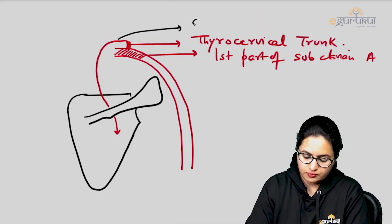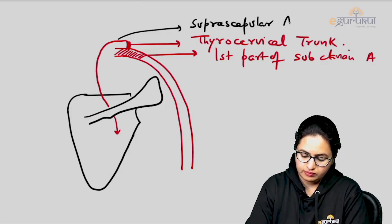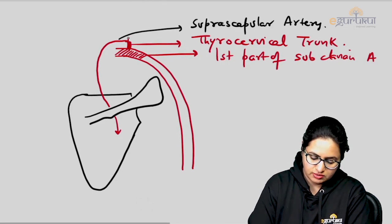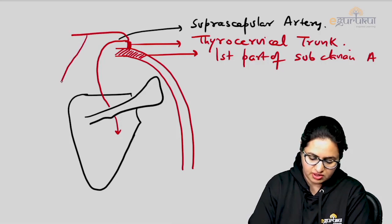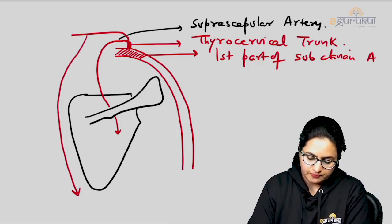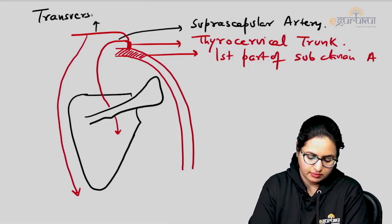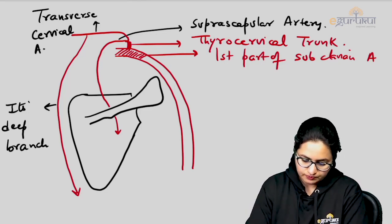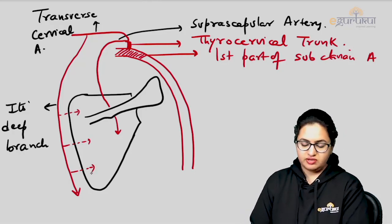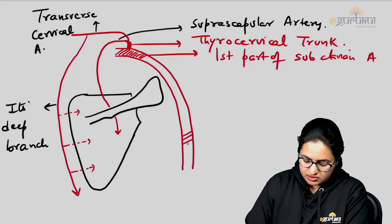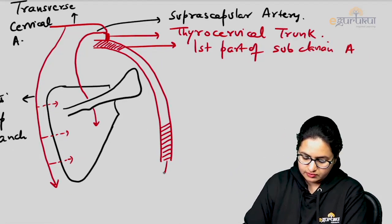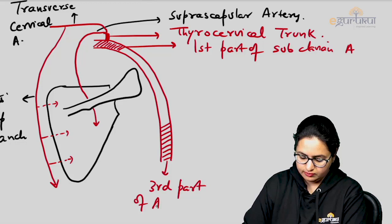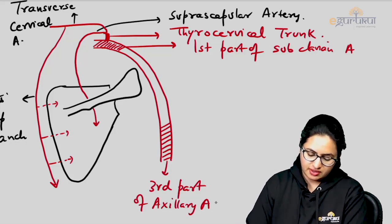The transverse cervical artery gives a deep branch which runs along the medial border of the scapula. This deep branch of the transverse cervical artery gives branches running towards the body of the scapula, participating in the anastomosis. The third part of the axillary artery gives three branches, one of which is the subscapular artery, running along the lateral border of the scapula.